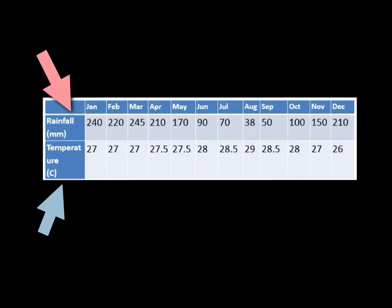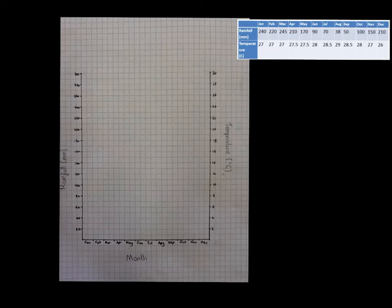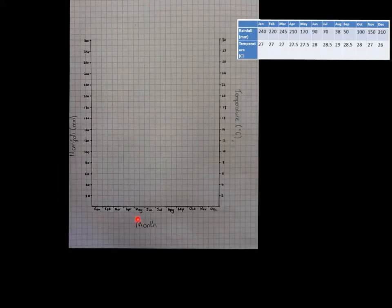Using these statistics, we now need to think about plotting these onto our graph. To do this, we need to draw a graph with three axes. One x-axis for the months of the year. A y-axis for plotting the rainfall in millimetres.